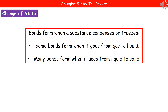If we consider what happens when we do the inverse — so when we're actually making a substance condense or freeze — then what we're seeing here is bonds are forming. So when we go from a gas to a liquid, some bonds will form. But when we then go from a liquid to a solid, many bonds are going to form.